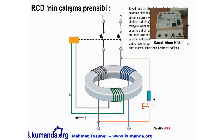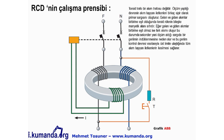RCD içerisinde bir toroid transformatör vardır; bu bir akım trafosu değildir. Akım taşıyan iletkenler toroidin primer sargısını oluşturur. Gelen ve giden akımlar birbirine eşit olduğunda toroidin bileşke manyetik alanı sıfırdır; sekonder sargıda gerilim indüklenmez. Eğer akımlar eşit olmazsa fark akımı oluşur, sekonder sargıda gerilim indüklenir; bu gerilim üst limitlere ulaştığında tüm akım taşıyan iletkenler kesilir.